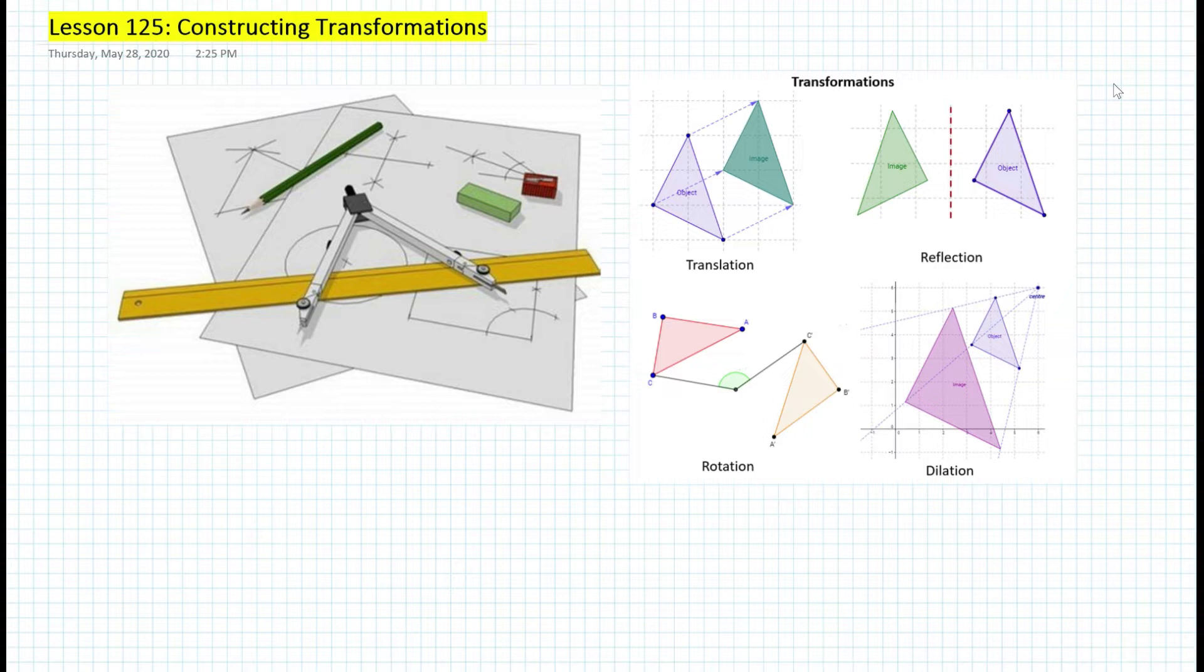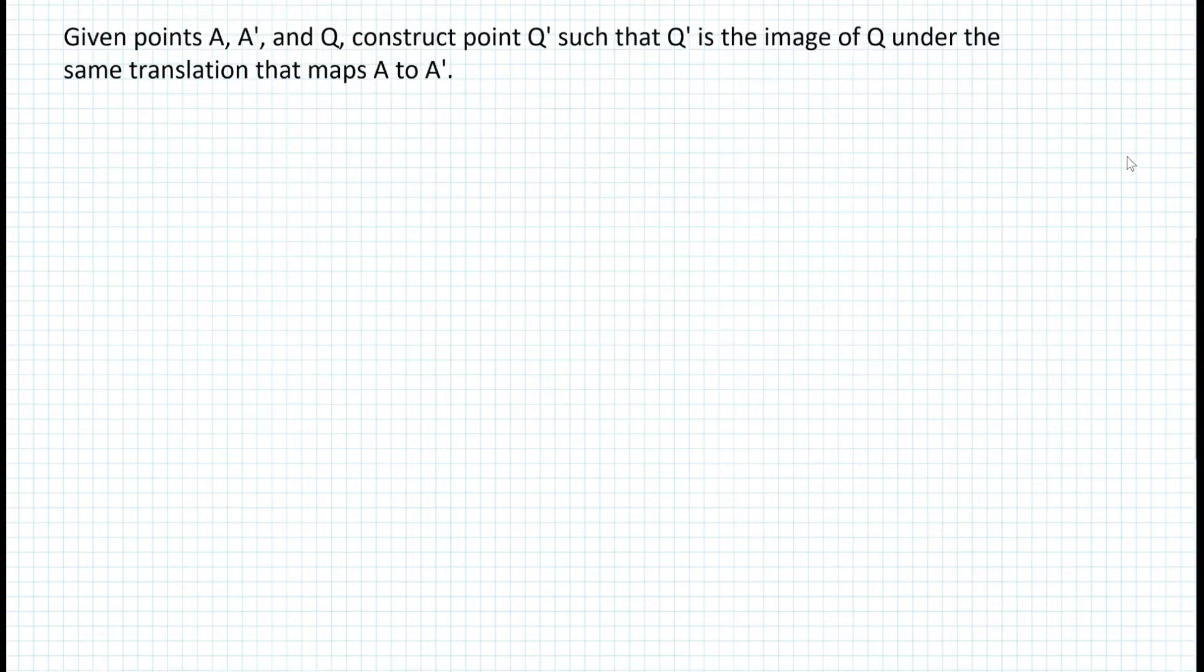Let's get started with the first example involving translations. Let's say you're given points A, A prime, and Q. Construct point Q prime such that Q prime is the image of Q under the same translation that maps A to A prime.